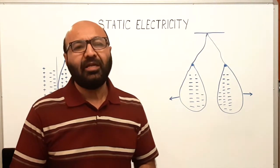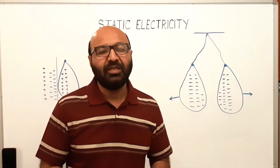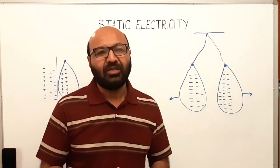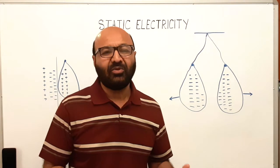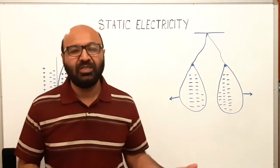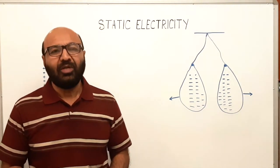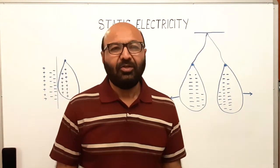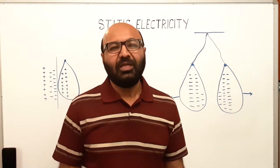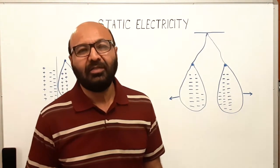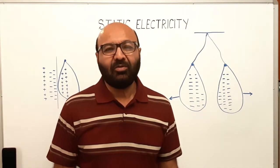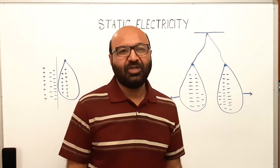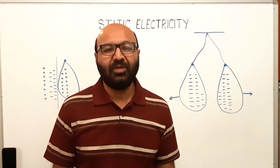Neutron and proton stay inside the nucleus. They are tightly bound inside the nucleus, whereas electron stays outside the nucleus and it can move from one atom to another. Due to this nature of atomic particles, static electricity is the result of imbalance between negative charge and positive charge of an element.